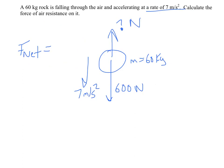So the net force downward is the mass, 60 kilograms, times 7 meters per second squared. We get the net force is 420 newtons.